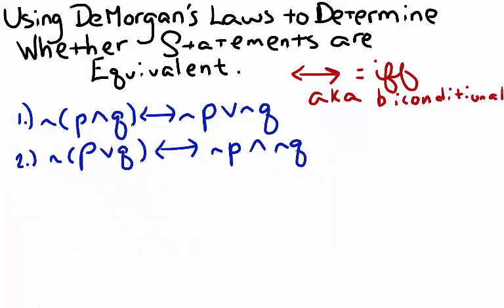Let's take a look at another equivalent form of DeMorgan's Law: P then Q if and only if the negation of P or Q.